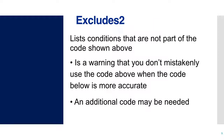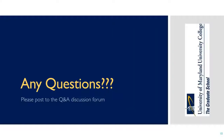You've got to read carefully, because there's also an Excludes 2 notation, which is more of a warning that a particular condition is not included in the above code. This means one of two things: you might be in the wrong place and actually need to report a different code, or you need to report this code and may need to report another code to tell the whole story. You'll learn more about this as you get more experience with ICD-10-CM. If you have any questions, make sure you post to the Q&A with the Professor discussion forum.